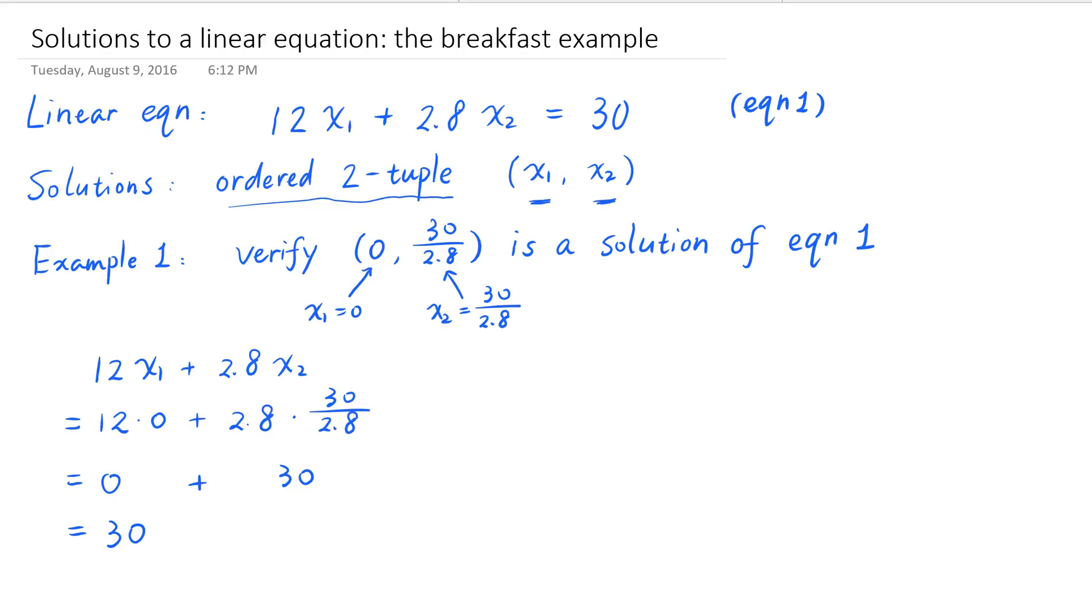Is this a desirable solution? Specifically, the solution says if I have no yogurt at all and 30 over 2.8, which is about 10.7143 ounces of granola, then that gives me 30 grams of protein. Now, how much is 10.7143 ounces of granola? One granola bar is about one ounce of granola, so this is about 11 granola bars. Who wants to have 11 granola bars with no yogurt to wash them down? So even though this is one solution of the equation, it does not give you a very pleasant breakfast.